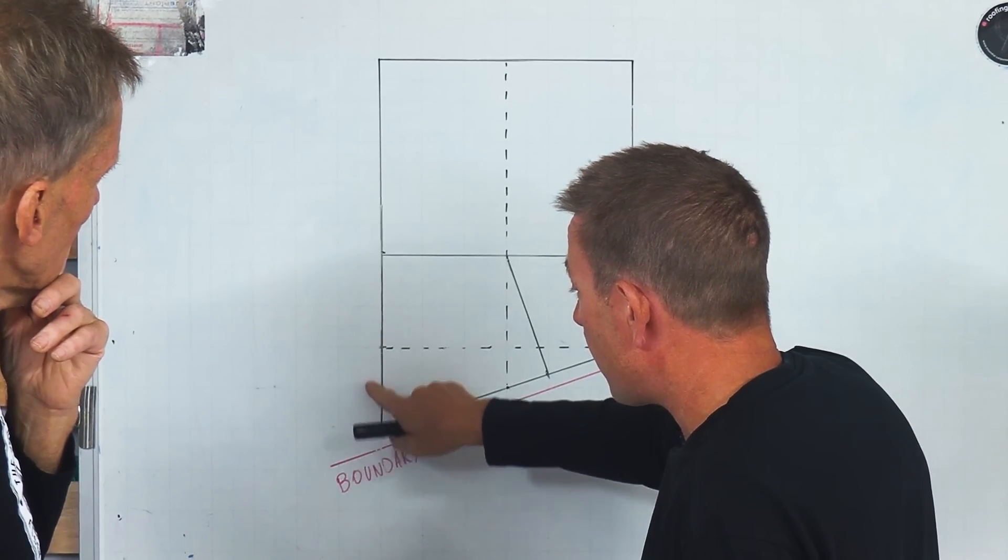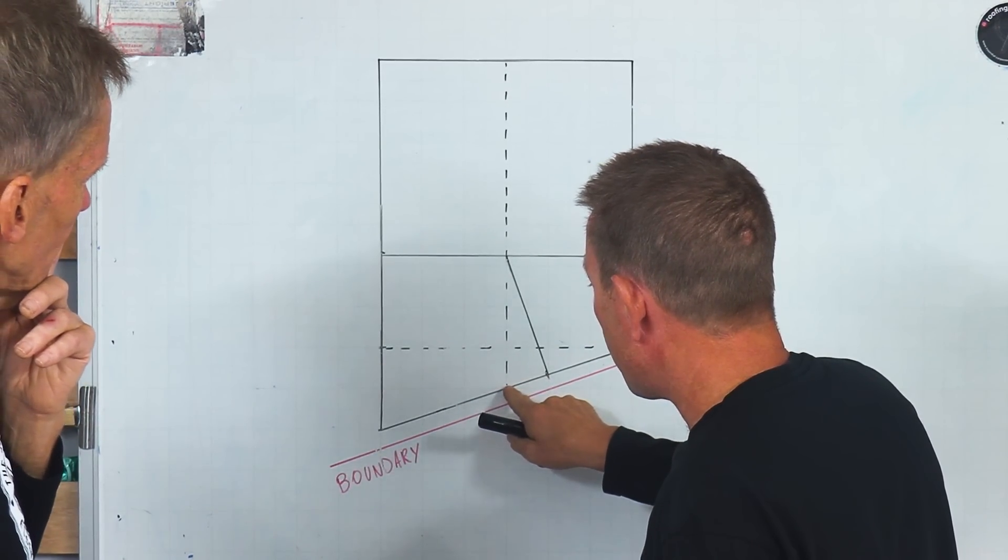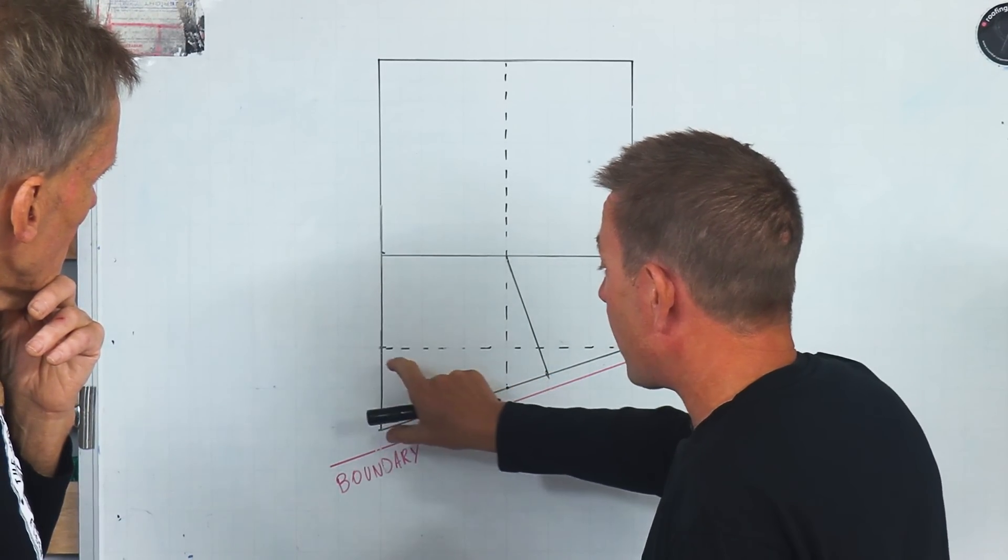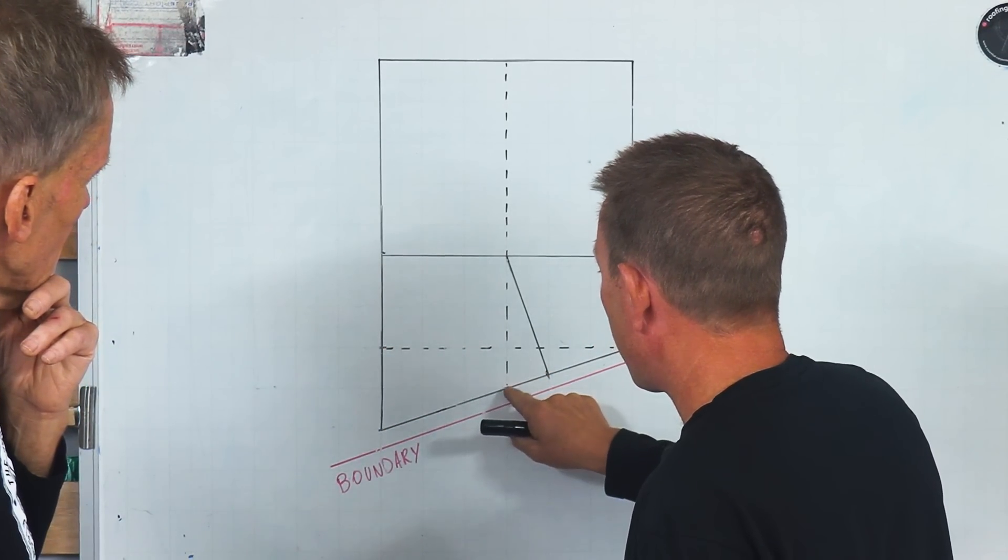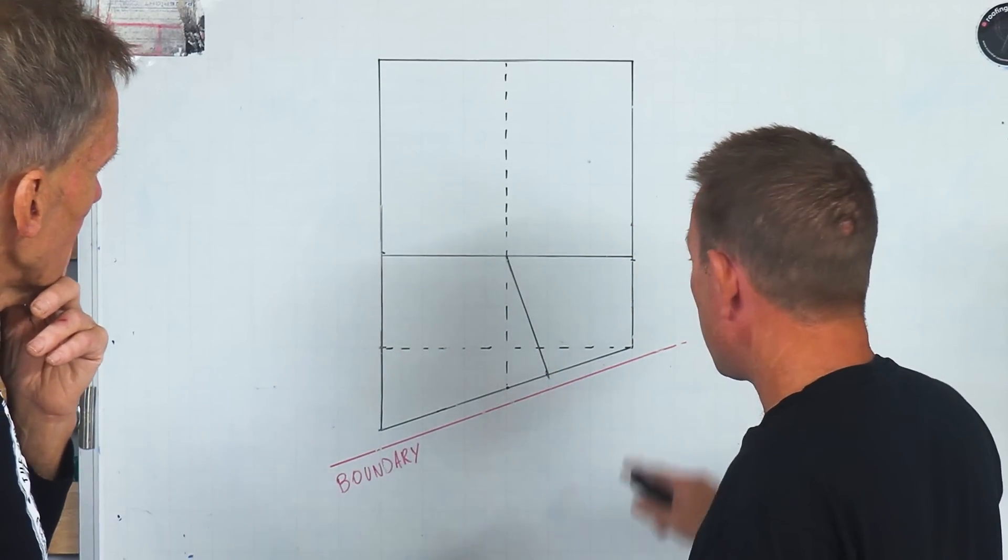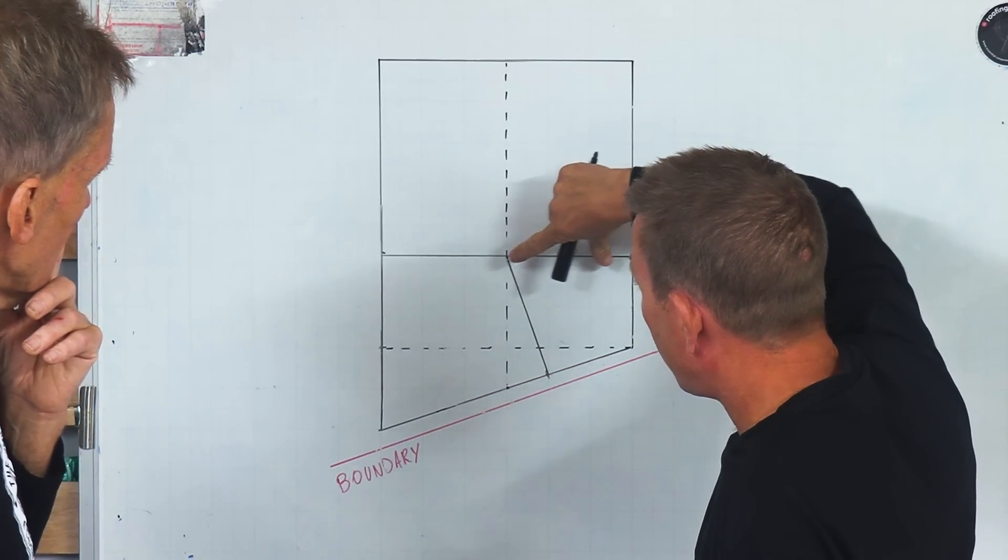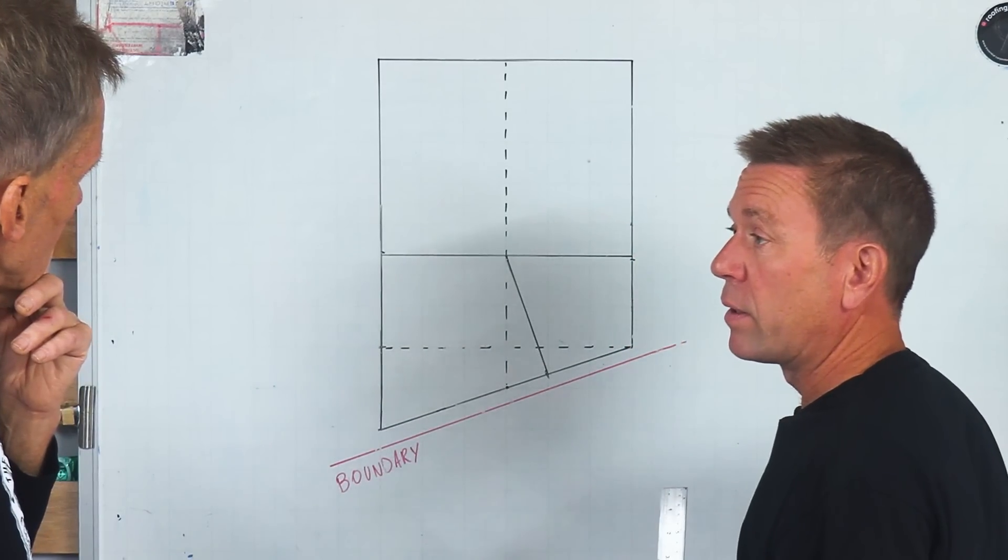So half of this length here, whatever that is, you come off the middle there. If that was two meters you come off there one meter. If that was three meters you come off there one and a half meters. Once you square it off, then that is your end common rafter there, end common rafter there, end common rafter there. And that is it.